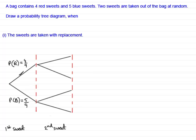And because we put the sweet back in the bag, then we have the possibility of taking out for our second sweet a red or a blue. And so the probability, again, of picking out a red sweet would have been 4 out of 9, and similarly, the probability of picking out a blue sweet would have been 5 out of 9. And then on this branch, the probability of picking out a red would have been 4 out of 9, or you could have picked out a blue, and the probability of that happening would be 5 out of 9.